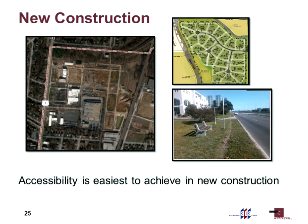New construction may be different than you think. Accessibility is easiest to achieve in new construction because there are no constraints — it's the best opportunity to move dirt, make grades the way you want, and establish a right-of-way wide enough to do what you need. New construction is expected to be fully accessible. However, it's pretty narrowly defined. For example, adding a sidewalk where none exists would not be new construction — it would be an alteration — because you already have an established right-of-way.